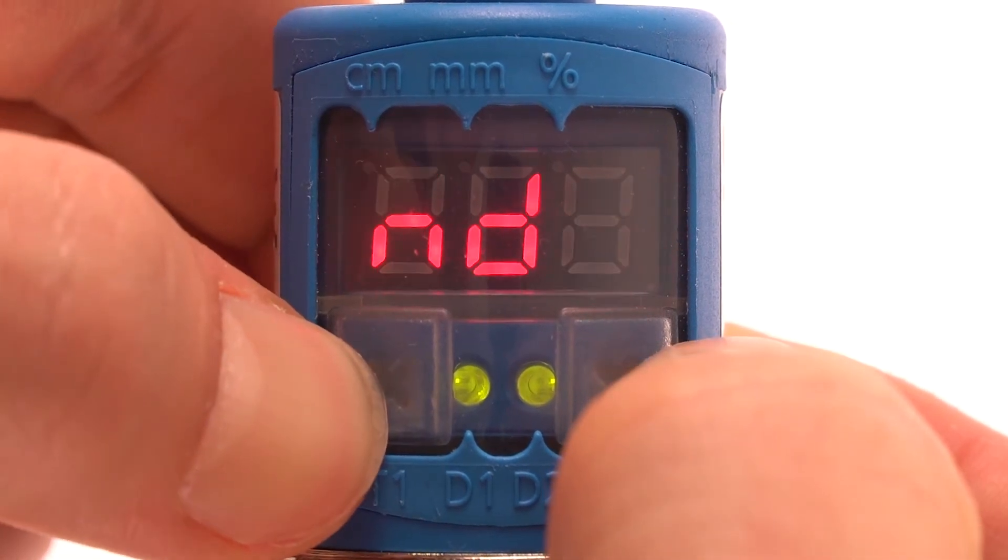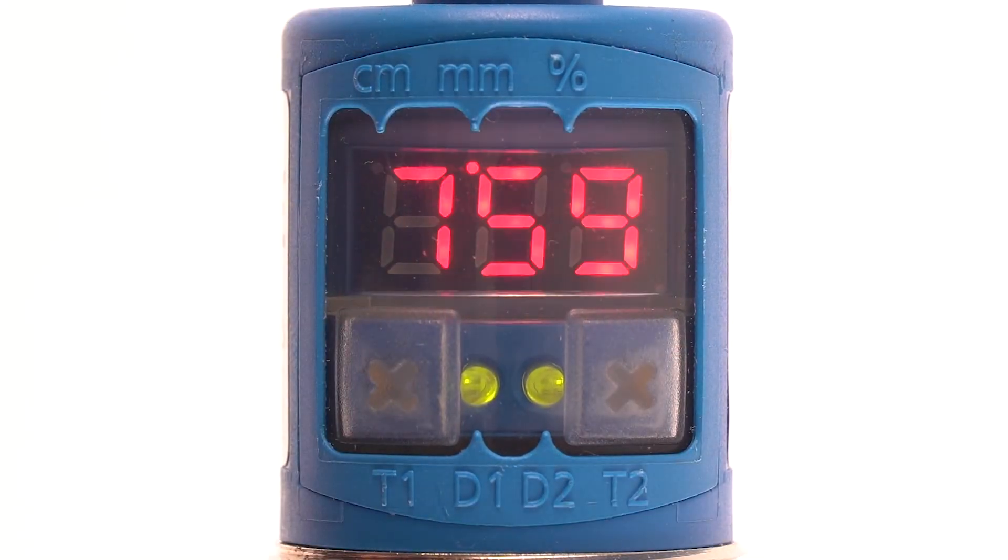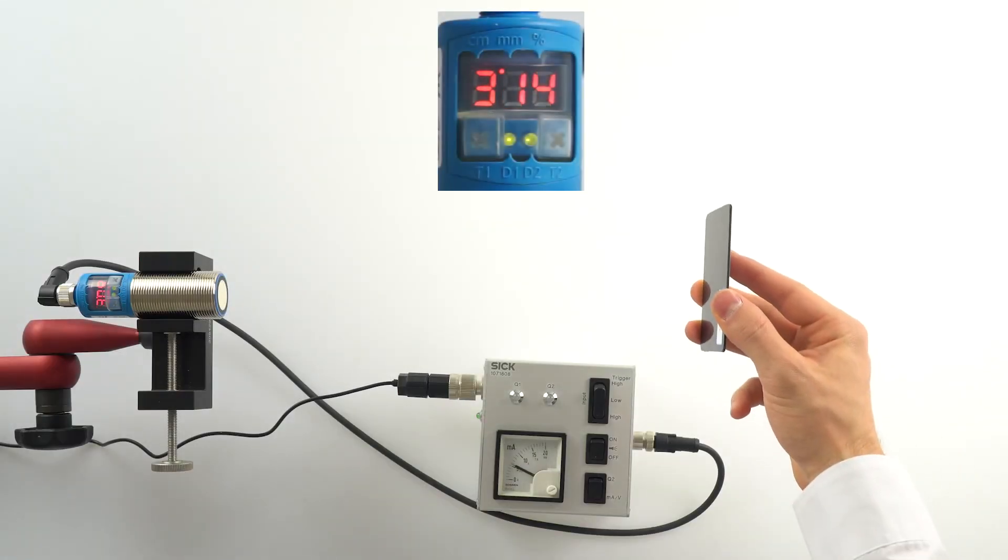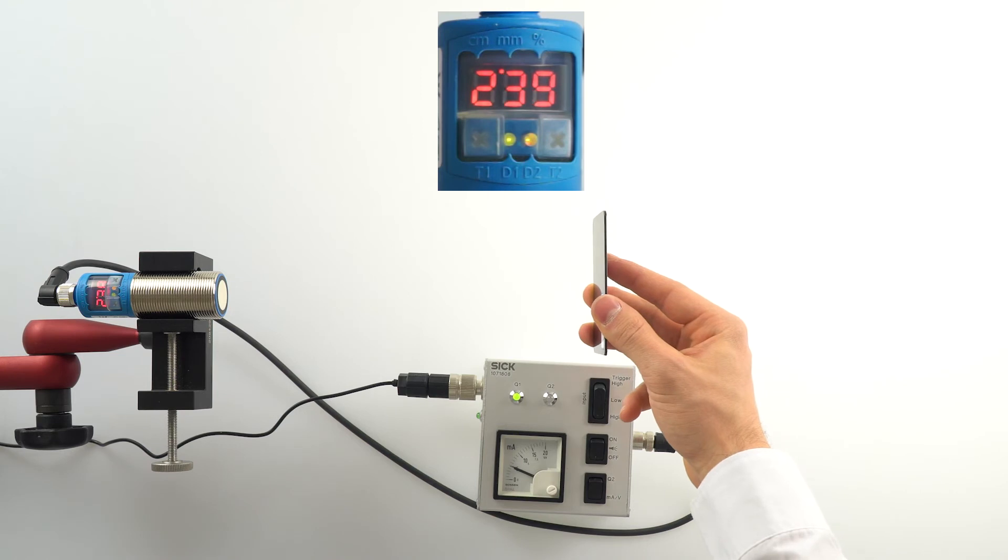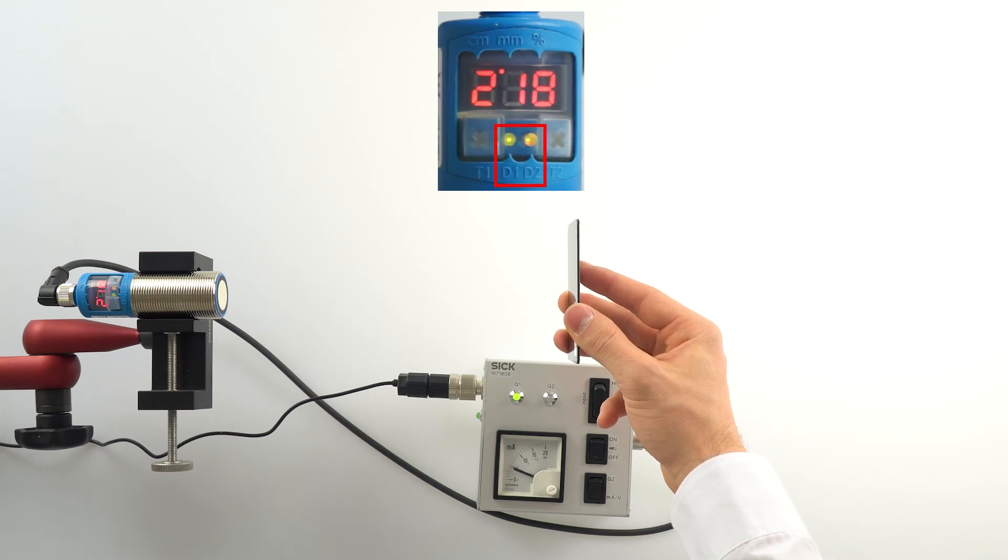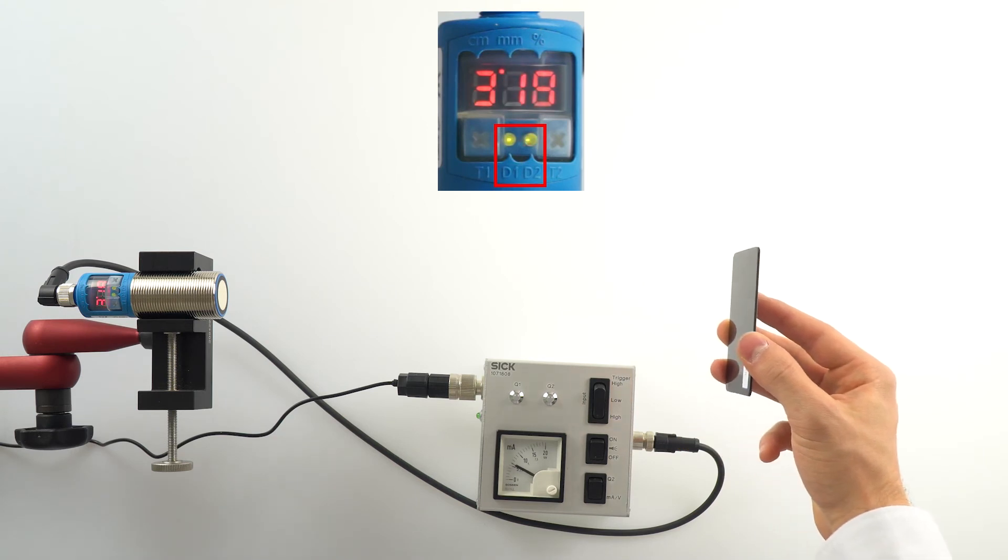To finish this parameterization, simultaneously press T1 and T2. The switching point is now saved. Now you are below the switching point, and now you are above the switching point.